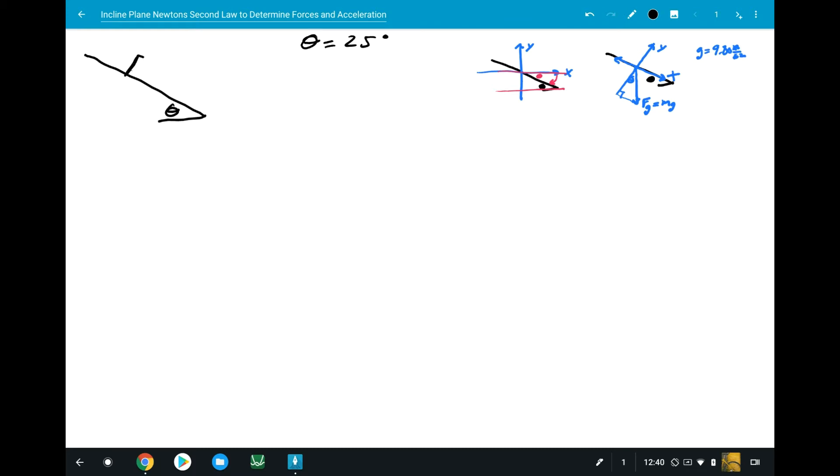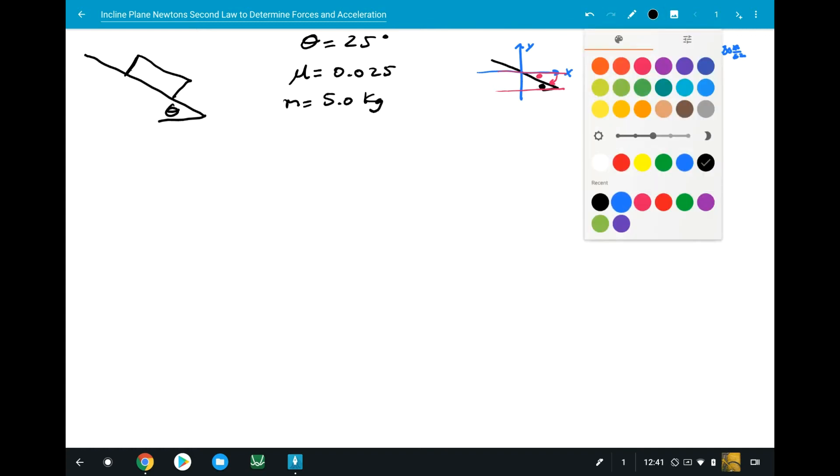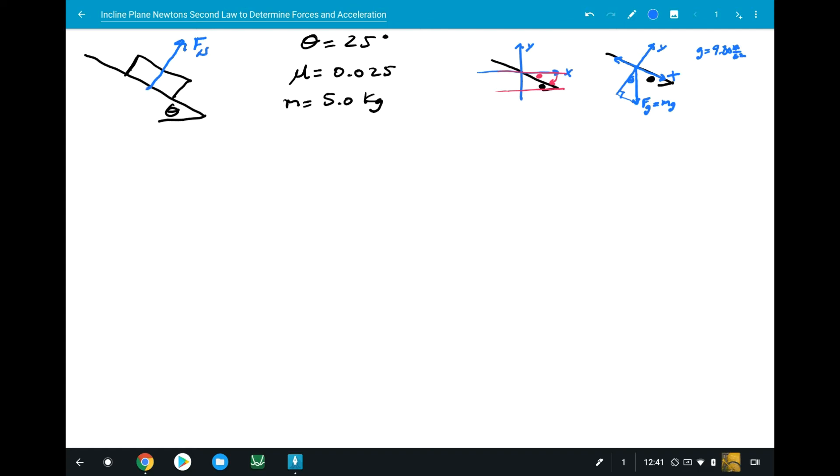Let's put a box that's on this ramp and it's going to slide down the ramp. The ramp's going to have a coefficient of friction for the box and ramp of 0.025. Let's make the box 5.0 kilograms. Let's draw our vector forces. Coming from the box-ramp, we have the normal force. The box is not falling through the ramp due to gravity pulling straight down, so we have FG. We're going to have friction going back.